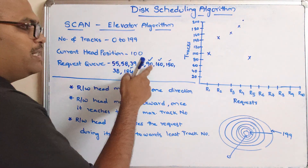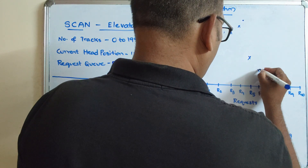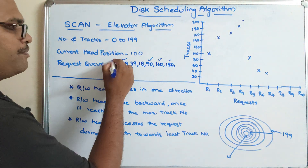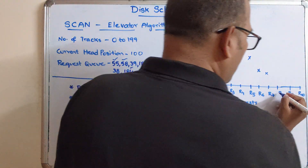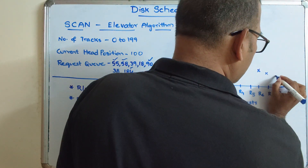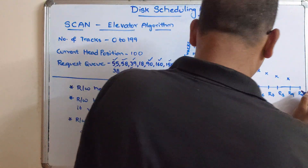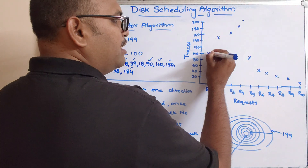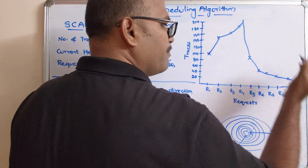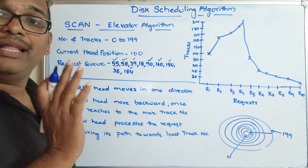After 90, the next request R6 is at 58. Then R7 is at 55. Then it moves toward 39, so R8 is at 39. The next request is at 38, and finally R10 is at 18. So you can see it starts at the current position, moves forward, and whenever it touches the maximum it goes backward — this is how requests are processed in the SCAN algorithm.